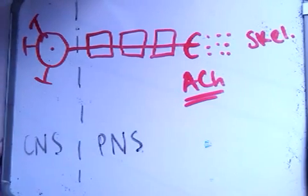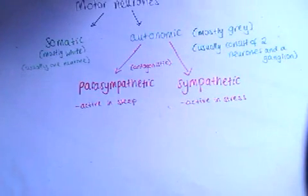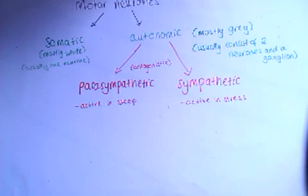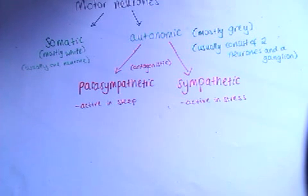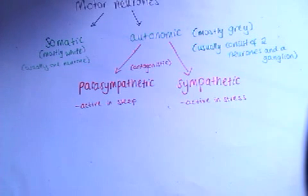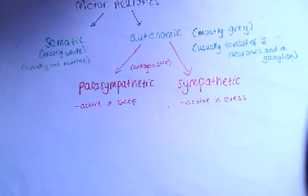Autonomic motor neurons can be broken down into two types: parasympathetic and sympathetic. They are antagonistic — they have opposite effects. Parasympathetic is active during sleep and relaxation, while sympathetic is active during stress and has more adrenaline-type effects.